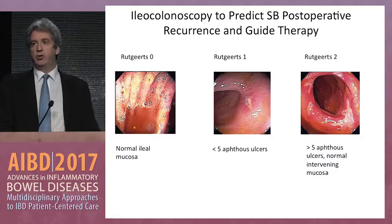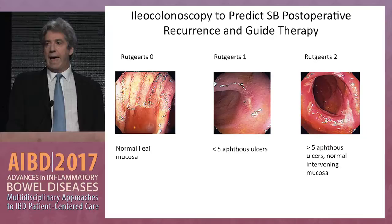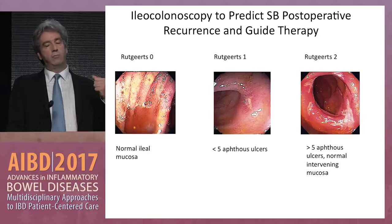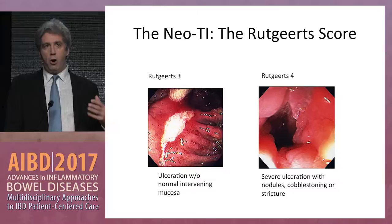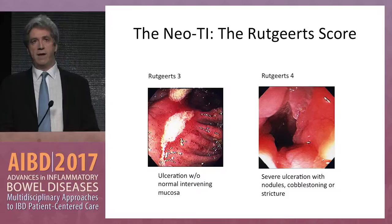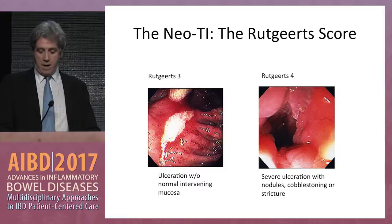Rutgerts one is a single aphthous ulcer or less than five aphthous ulcers. Rutgerts two is somewhat nebulous — if you have not five or less aphthous erosions but say six, does that tip you into a much more aggressive disease course? As Miguel Ruguera has taught us, there are Rutgerts score twos that are more like ones — basically six aphthous erosions instead of five — and then there are more ugly-looking Rutgerts twos. We see a lot more erythema perhaps, but not quite enough to call it a Rutgerts three, which is where you have ulcerations but no normal mucosa.